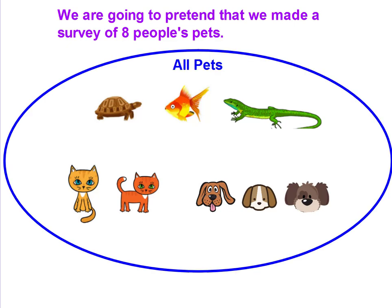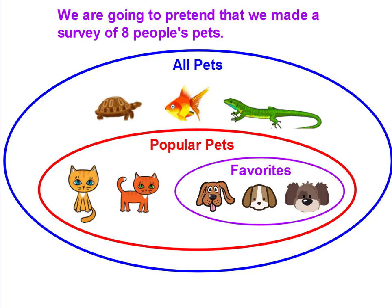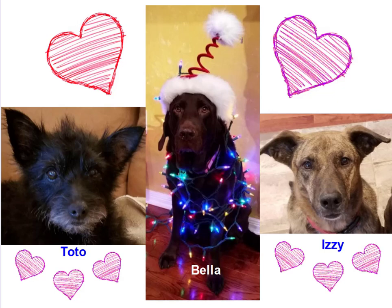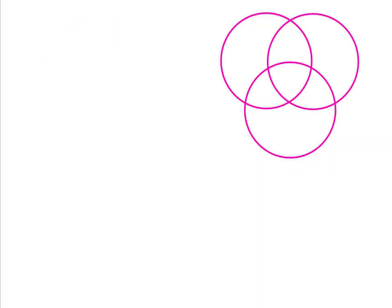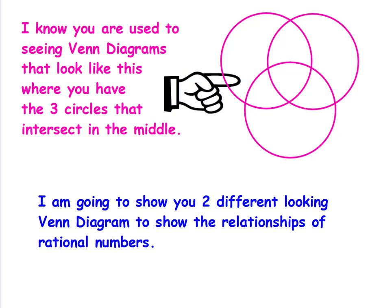We can see that most people had cats and dogs, and we can group these together inside the bigger group and call them Popular Pets. I'm going to make one more group inside Popular Pets and call it Favorites. I know that you're used to seeing Venn diagrams that look like this, where you have three circles that intersect in the middle. And I'm going to show you two different looking Venn diagrams that show the relationships of rational numbers.